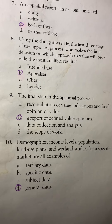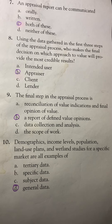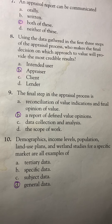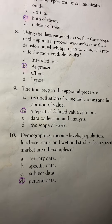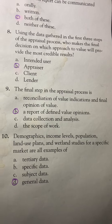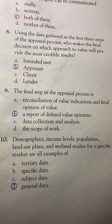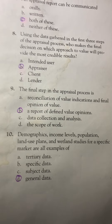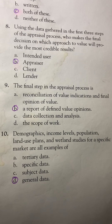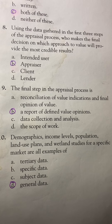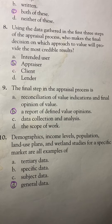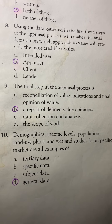Number 9. The final step in the appraisal process is: A. Reconciliation of value indications and final opinion of value, B. A report of defined value opinions, C. Data collection and analysis, or D. The scope of work. The answer is B: A report of defined value opinions.